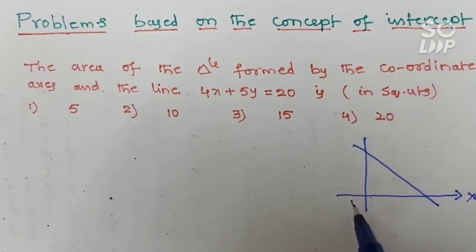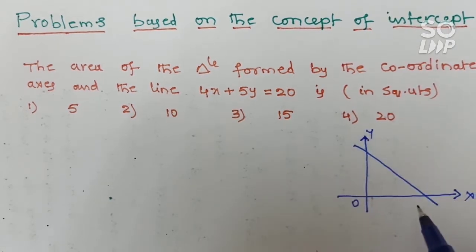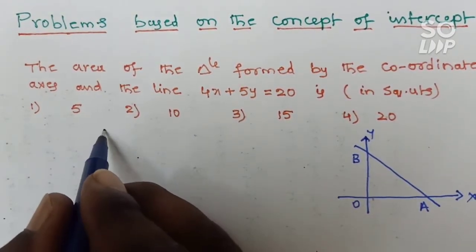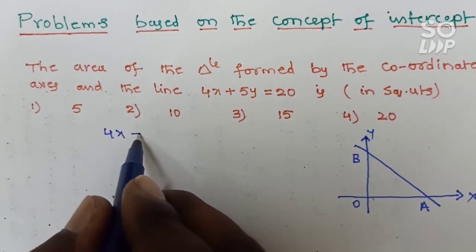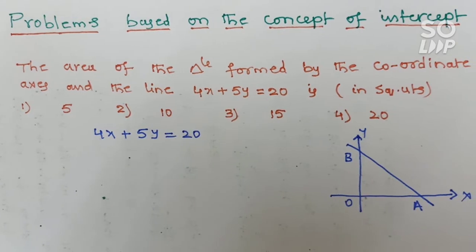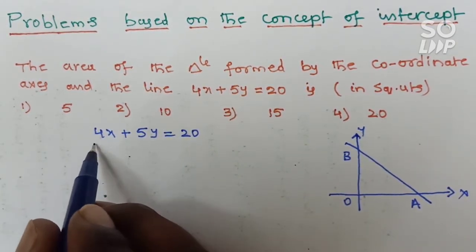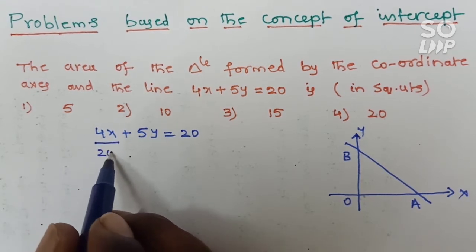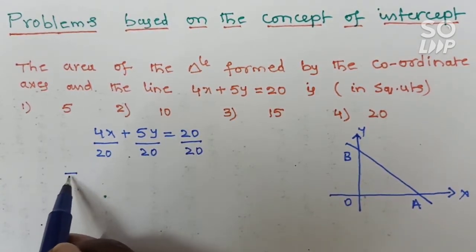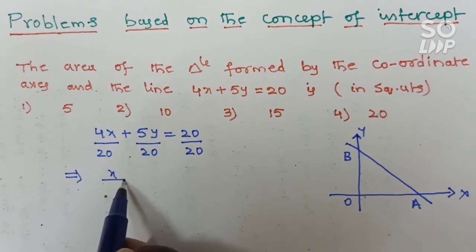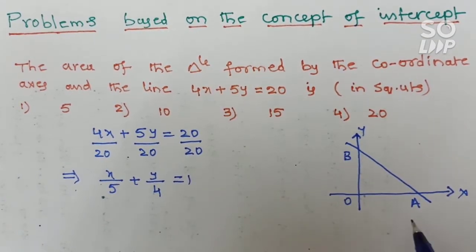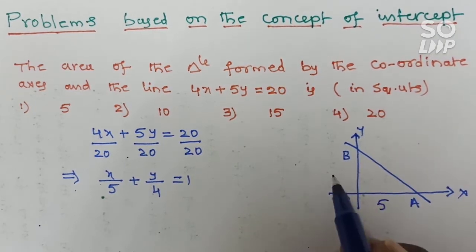Here this one is the x-axis, origin, and this one is the y-axis. Let this point be A and this point be B. This line is 4x plus 5y is equal to 20. The traditional method is to convert this into intercept form — divide it by 20. The intercept form is x/A plus y/B is equal to 1. This becomes x/5 plus y/4 is equal to 1. So the x-intercept is 5 and the y-intercept is 4.